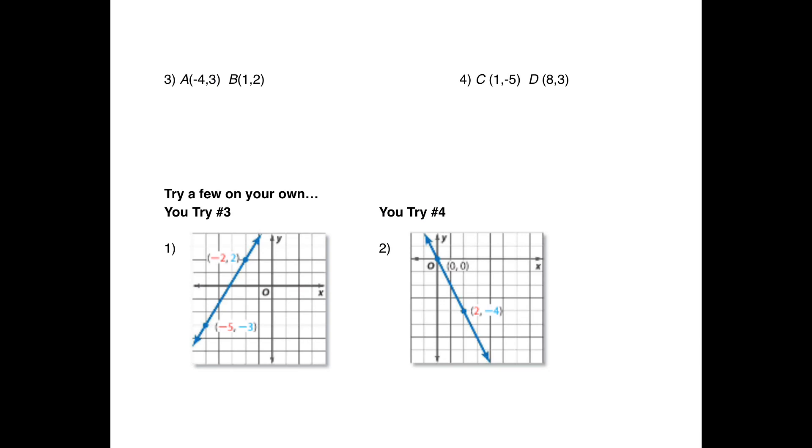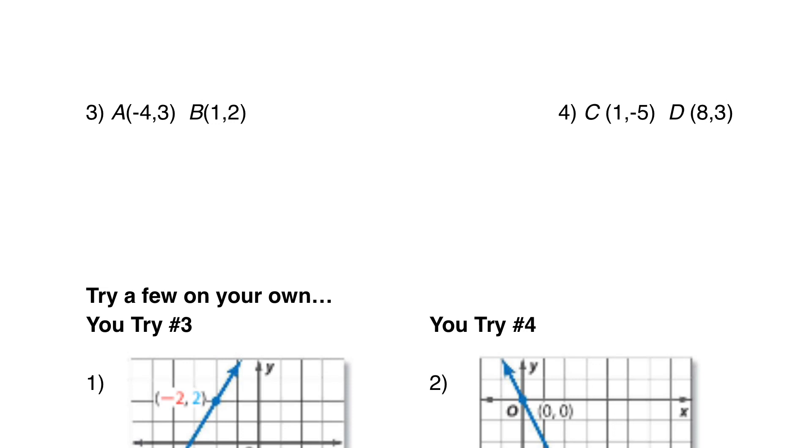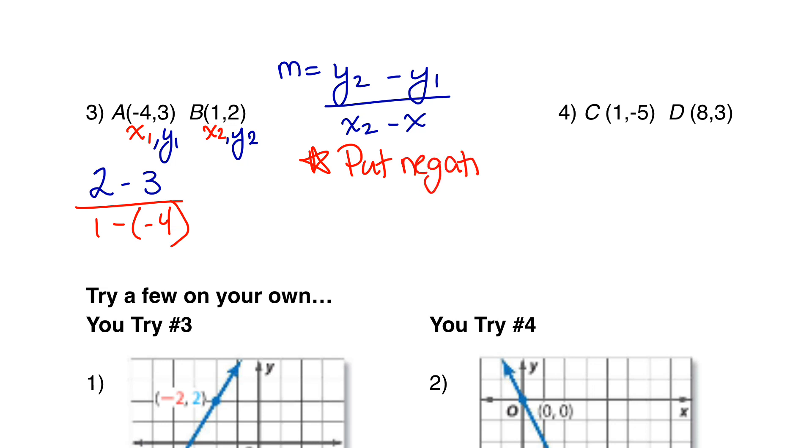These right here are going to be the same exact thing, except you don't have a graph. Still go through and label x1, x2, y1, y2. Then you're going to have 2 minus 3, because we know our equation is m equals y2 minus y1 over x2 minus x1. Then we'll have 1 minus negative 4. Remember to put your negatives in parentheses.